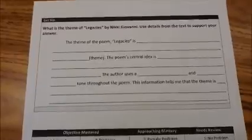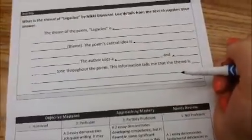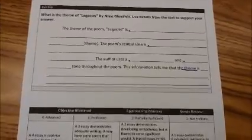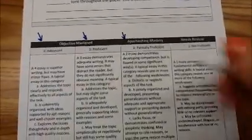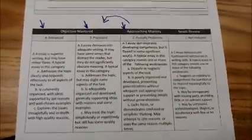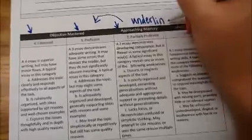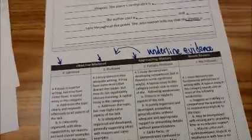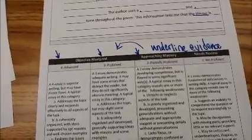Now that you've decided on the theme, you're ready to complete your exit slip. This follows the same format as our practice: 'The theme of the poem is blank. The central idea is blank. The author uses a blank and blank tone through the poem, and this tells me that the theme is blank.' Go ahead and make sure you've completed all parts of your exit slip. Then assess yourself — are you at an advanced, proficient, or partially proficient level? If you're partially proficient, what do you need to do to get to proficient? Read through the rubric and underline evidence of where you're at. If you've finished before the end of class, take out your homework packet and silently begin your homework for tonight. Thanks for participating in today's video lesson.